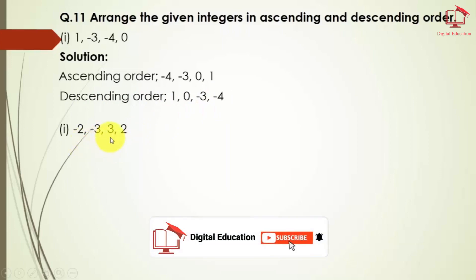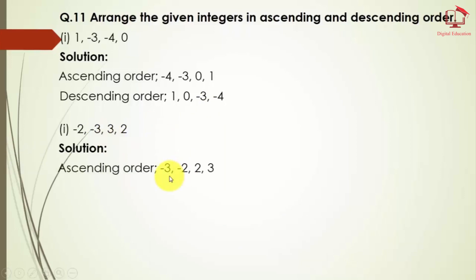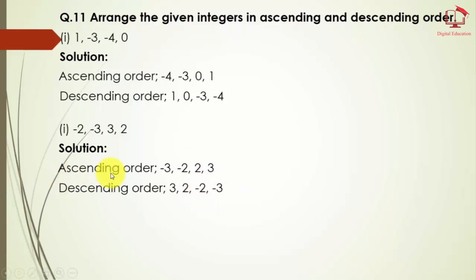For part 3, the numbers are minus 2, minus 3, 3, and 2. The ascending order is: minus 3, minus 2, 2, and 3. The descending order is: 3, 2, minus 2, and minus 3. In ascending order we write from lower to higher; in descending order from higher to lower. This completes exercise 4.1. I hope you understand well. If you have any questions, you can ask me and I will answer as soon as possible. Take care, Allah Hafiz.